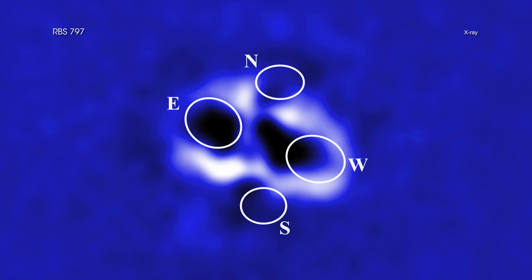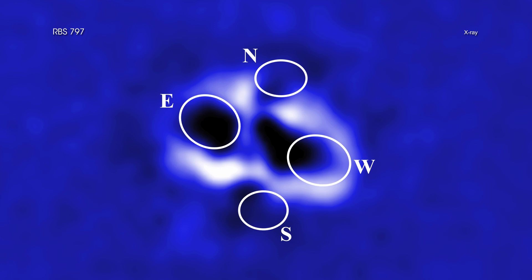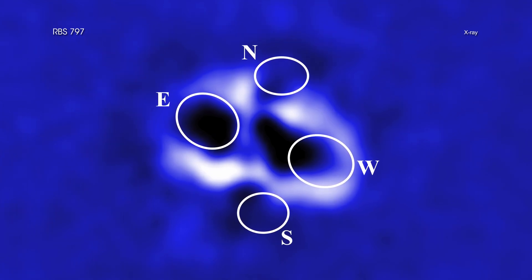The revelation in RBS 797 is that there are two sets of jets directed perpendicular to each other. Astronomers previously observed the pair of cavities in the east-west direction in RBS 797, but the pair in the north-south direction was only detected in a new, much longer Chandra observation.